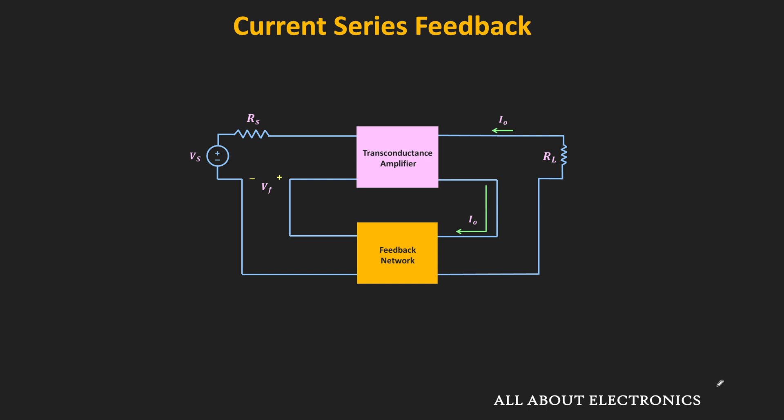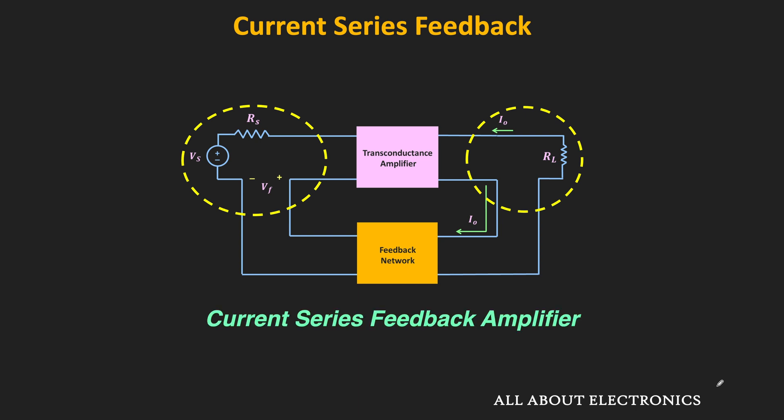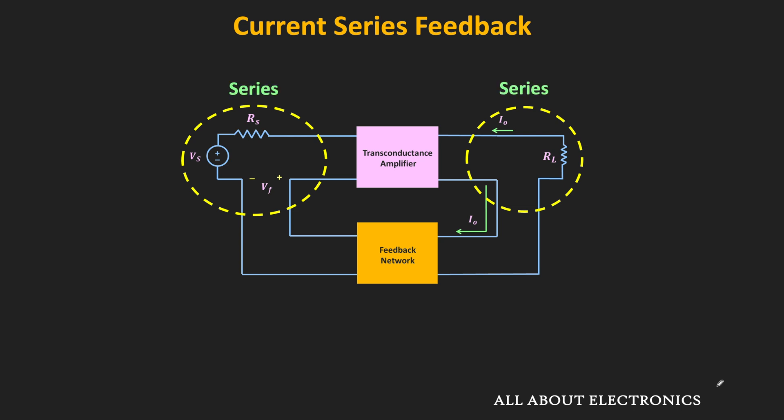In this current series feedback amplifier, we have a basic transconductance amplifier and the feedback network. If we see the connection between the basic amplifier and the feedback network on the output side, then it is the series connection — the feedback network is sampling the output current. Similarly on the input side, this feedback voltage Vf is mixed with the input signal using the series connection. Since the output current is sampled and sent to the input side using series mixing, this feedback amplifier is known as the current series feedback amplifier. Since we have series connection on both input and output sides, it is also known as the series-series feedback amplifier.